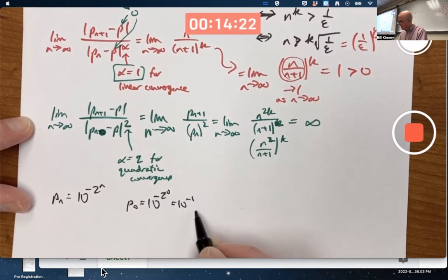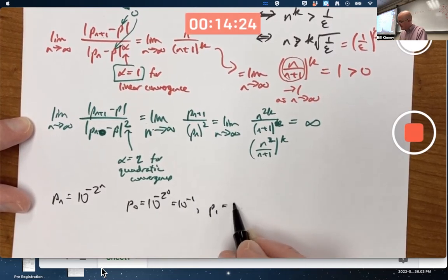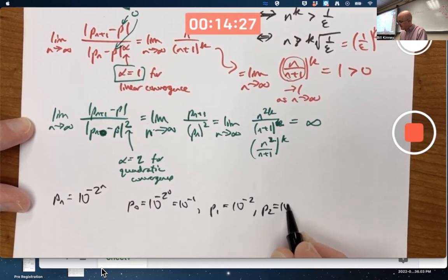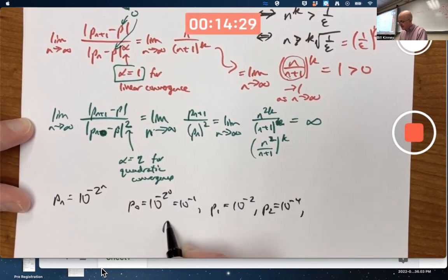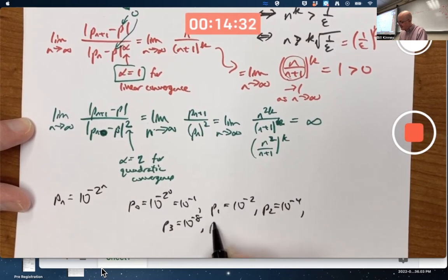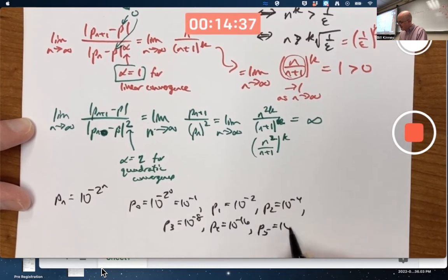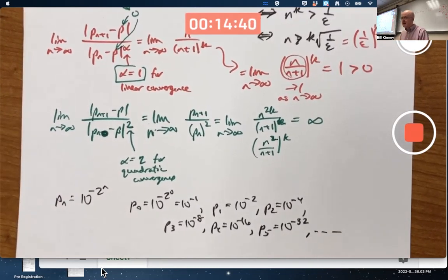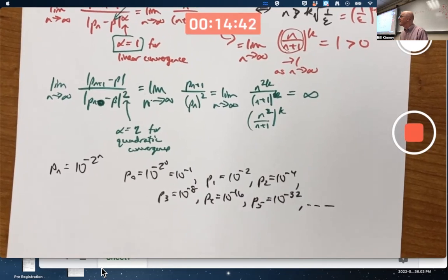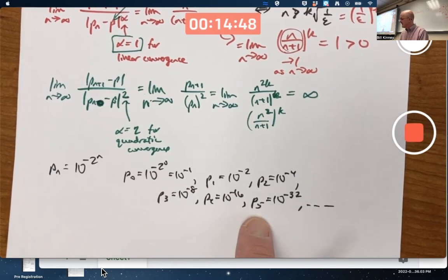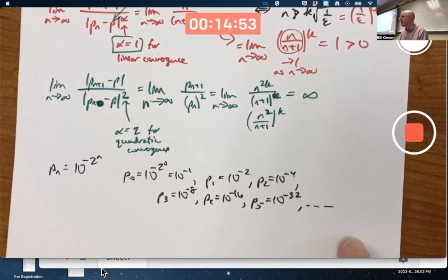p sub 0 is 10 to the negative 2 to the 0, which is 10 to the negative 1. p sub 1 is 10 to the negative 2. p sub 2 is 10 to the negative 4. p sub 3 is 10 to the negative 8. p sub 4 is 10 to the negative 16. It is converging to 0 much more rapidly than we're used to seeing here. And it turns out it's converging to 0 quadratically. If you're going to write these out as decimals, 10 to the negative 32 is 0.000 with 31 zeros and then a 1. It's converging to 0 very rapidly, more rapidly than we're used to with most sequences.